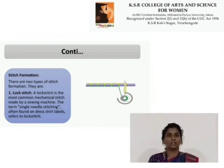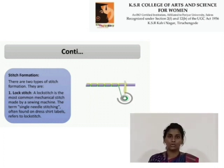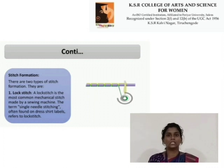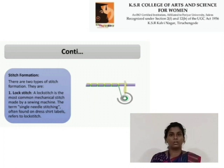Stitch formation. There are two types of stitch formation. First, lock stitch. A lock stitch is the most common mechanical stitch made by a sewing machine. The term single needle stitching often found on dress and skirt labels refers to lock stitch.